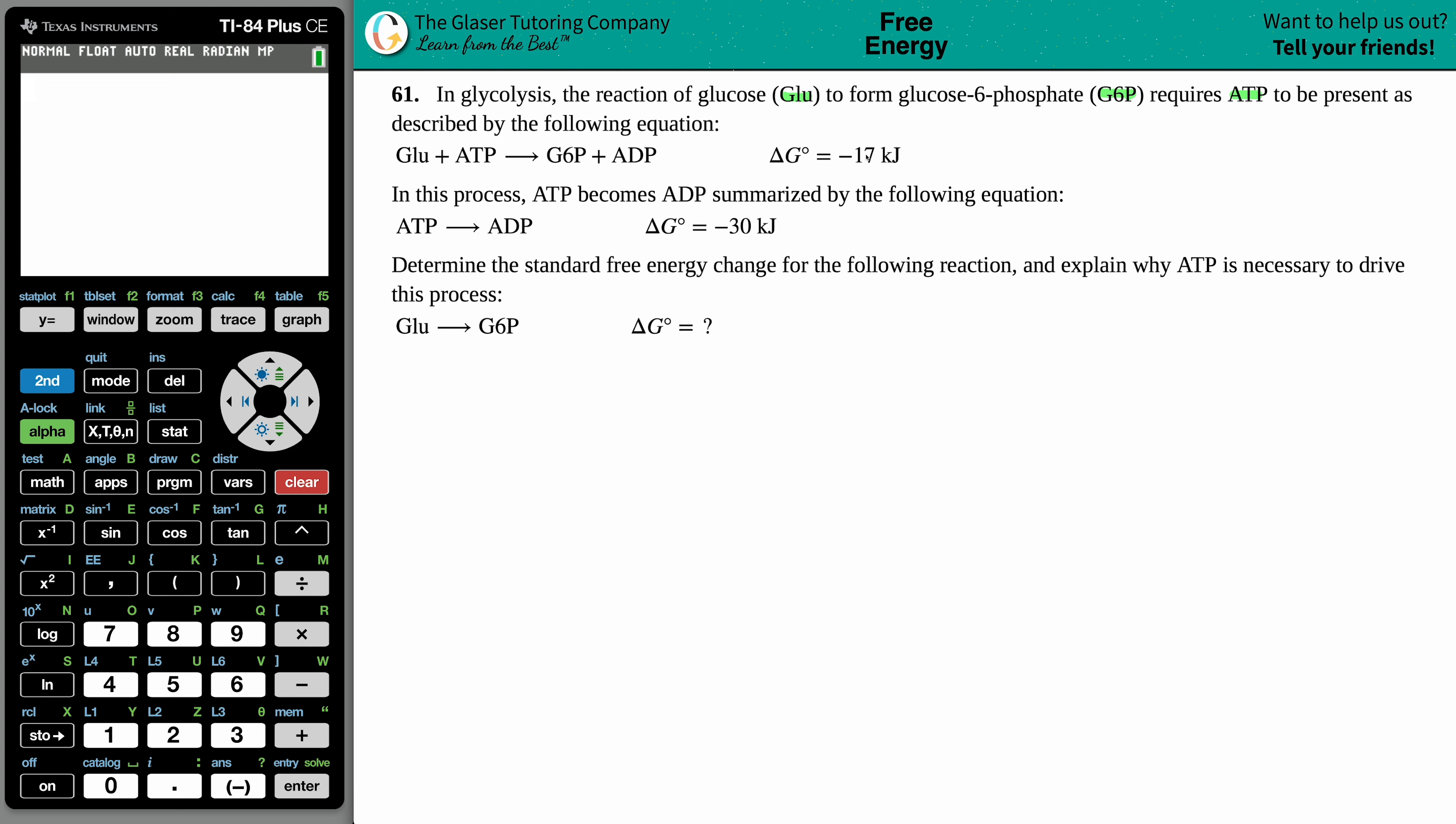In this process, ATP becomes ADP summarized by the following equation. So then they give me this: ATP yields ADP, and this is also a delta G notch of negative 30 kilojoules. Determine the standard free energy change for the following reaction and explain why ATP is necessary to drive this process.